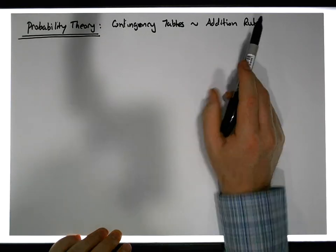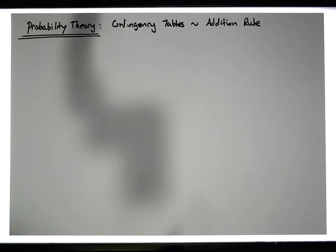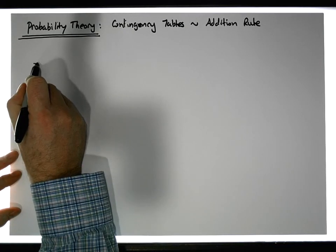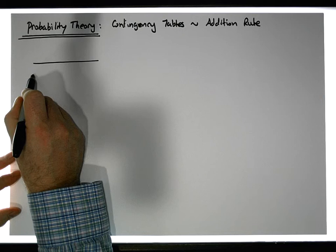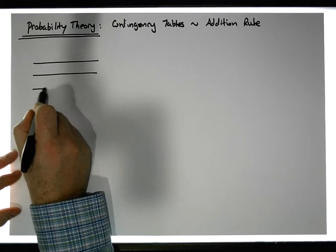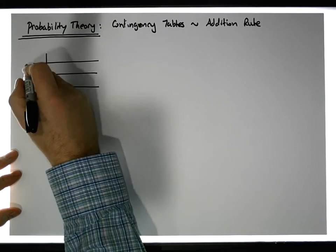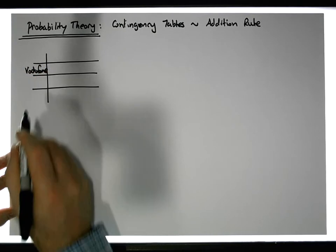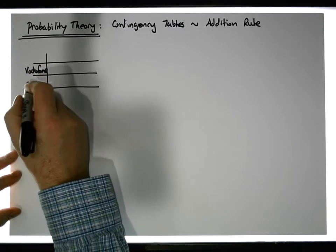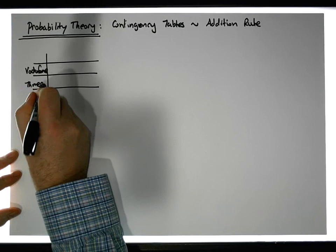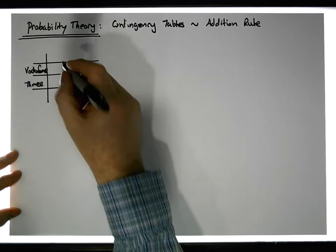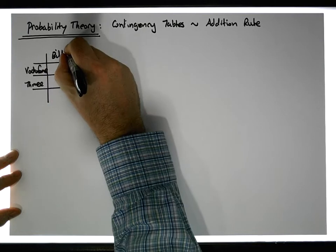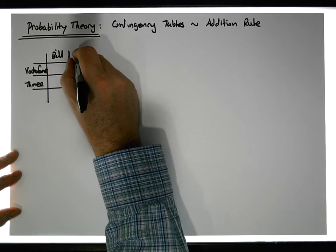In this video we're going to concentrate on the addition rule. Let's look at a particular contingency table. Let's say we have a number of students who were asked two questions. The first question was what type of service provider they have with respect to their phone—it could be Vodafone or Three, two service providers in Ireland. The second question was whether they're a bill pay customer, paying a monthly bill, or whether they pay as you go.